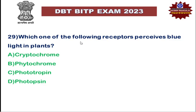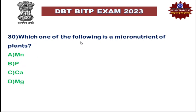Next: which of the following receptors perceive blue light in plants? Cryptochromes and phototropins are responsible for perceiving blue light in plants, whereas phytochromes alone are responsible for absorbing red light and far-red light pigments in plants.